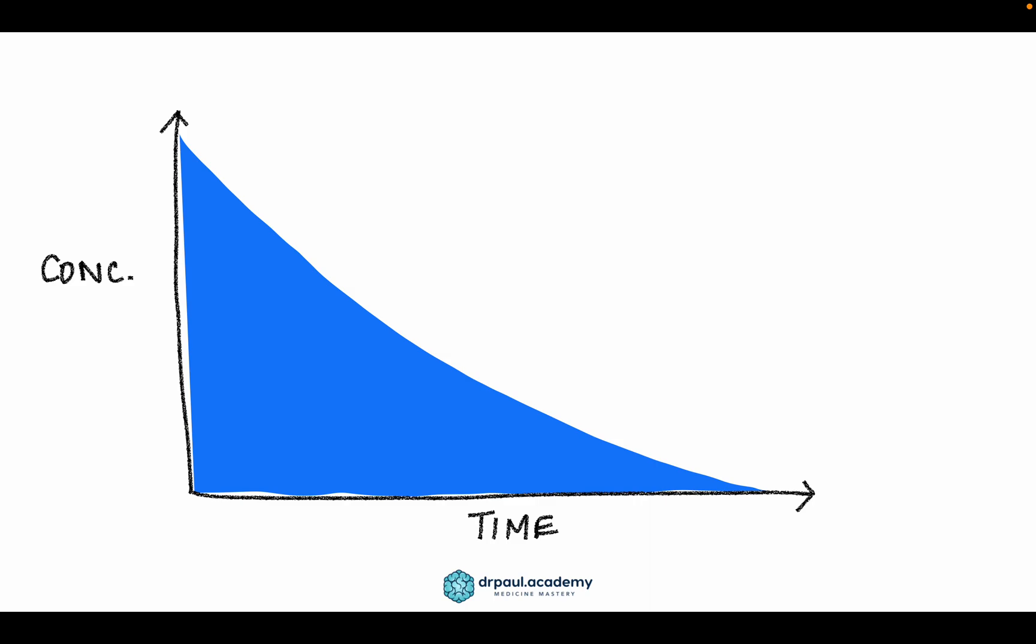Similarly, you can make a curve for other routes as well. Let's say we have another curve, and this red one is for the oral route. Since area under the curve is proportional to bioavailability, and we know that the intravenous route has the maximum bioavailability possible at 100%, we can calculate the bioavailability for any other route, in this case the oral route, by dividing the area under the curves. Bioavailability is the area under the curve of the route, in this case oral, divided by the area under the curve of the IV route.